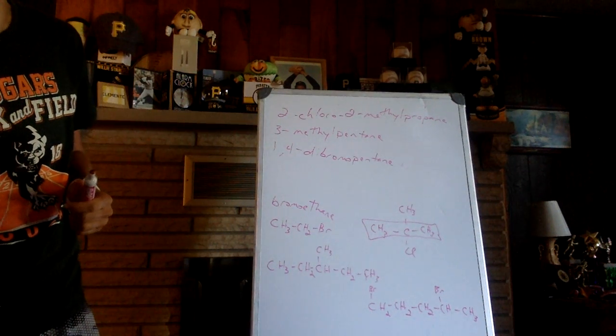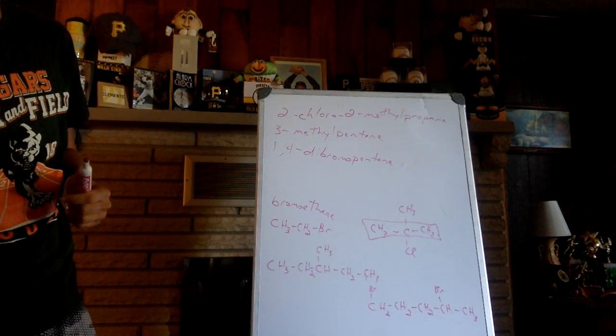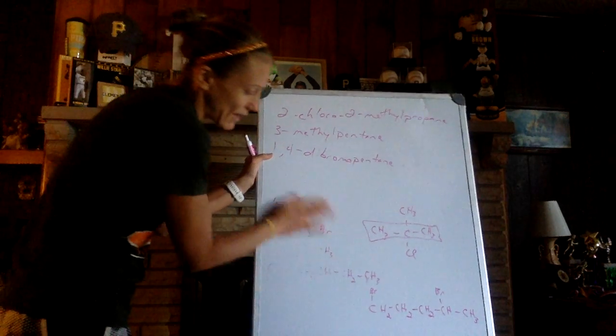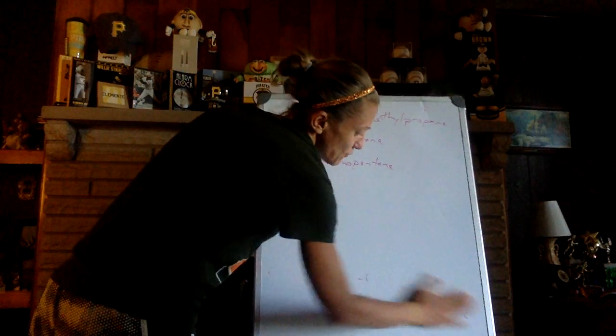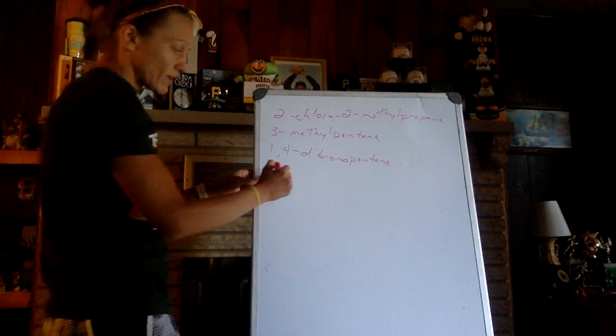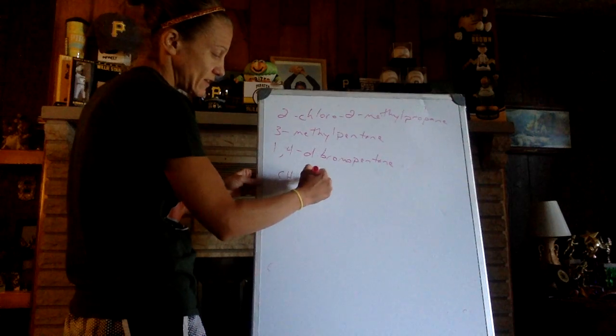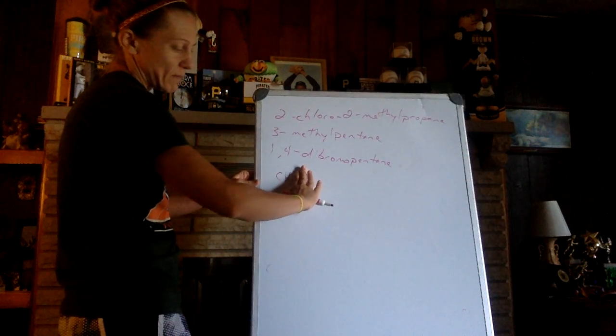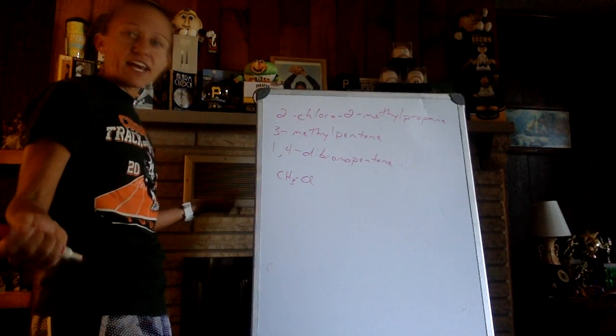So let's draw some now, and then talk a little bit about cycloalkanes. So if I draw chloromethane, methane would be CH4. I just need CH3-Cl, because it would be methane but with that extra chlorine.